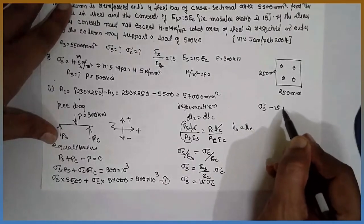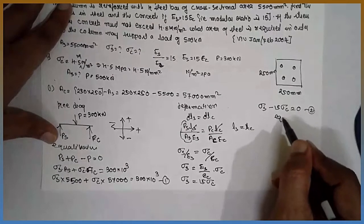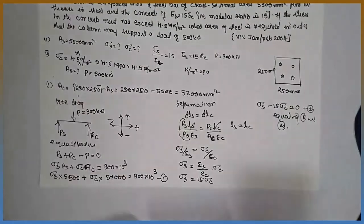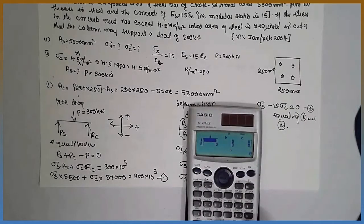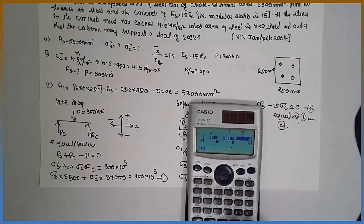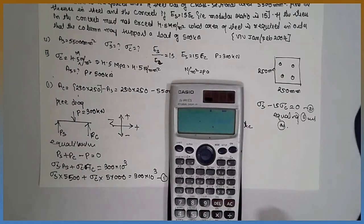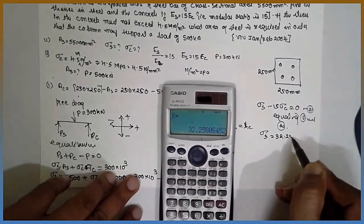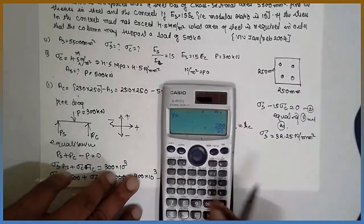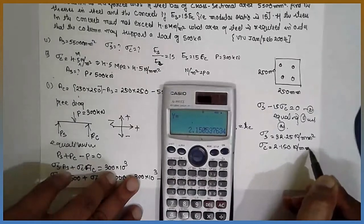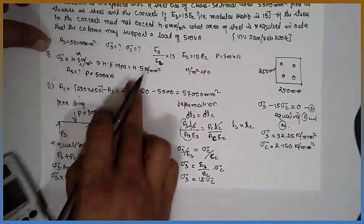From Equation 2: σS − 15·σC = 0. Substituting into Equation 1 and solving, we get the answers: σS = 32.25 N/mm² and σC = 2.150 N/mm². We have now solved the first part and obtained the stresses.